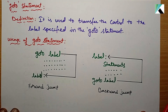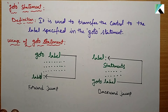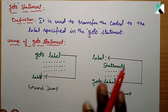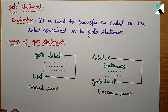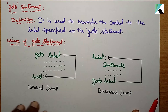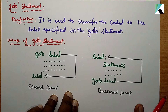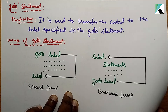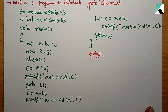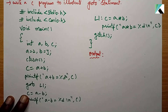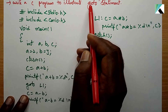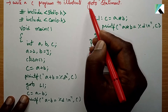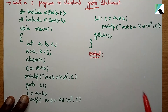But as per the concept, we have to learn about the goto statement. Let's see how the goto statement can be used in a program. We'll write a C program to illustrate the goto statement — that's our example.